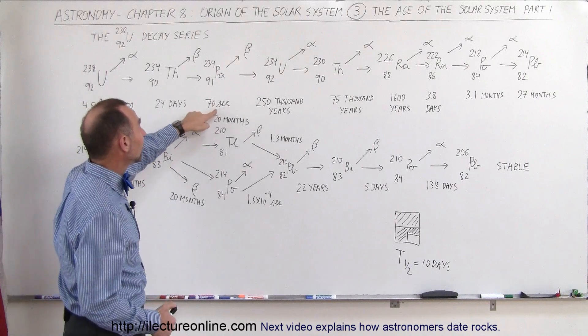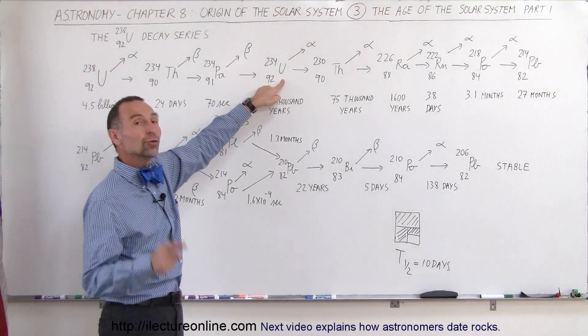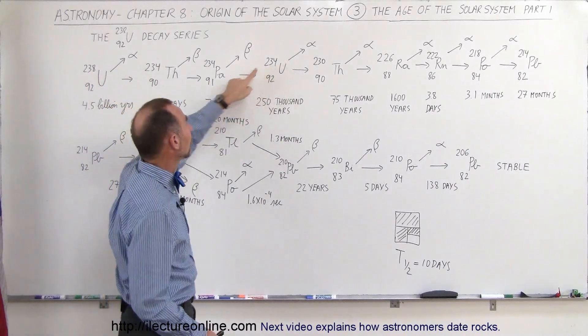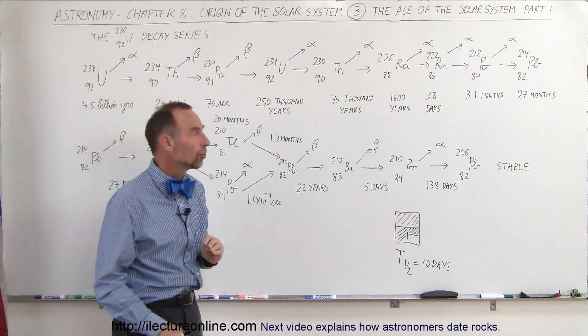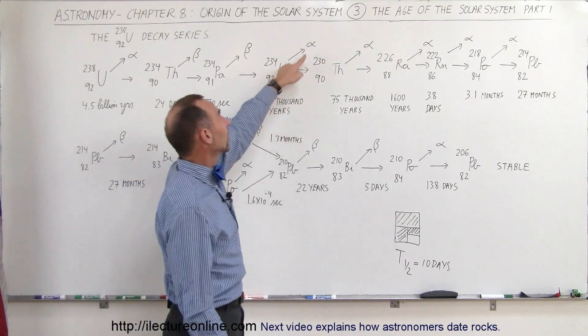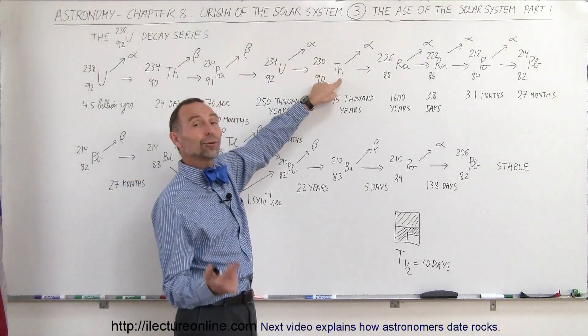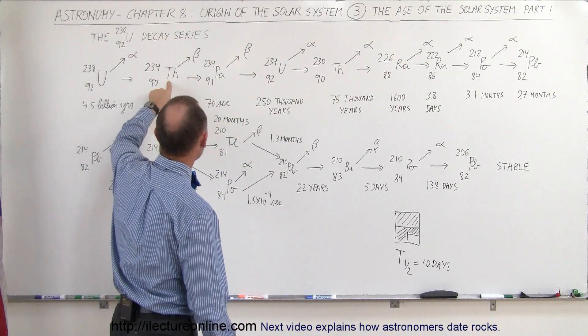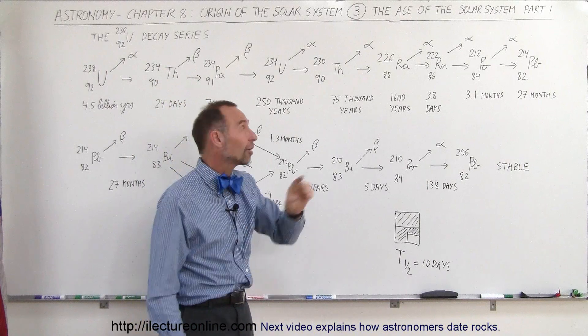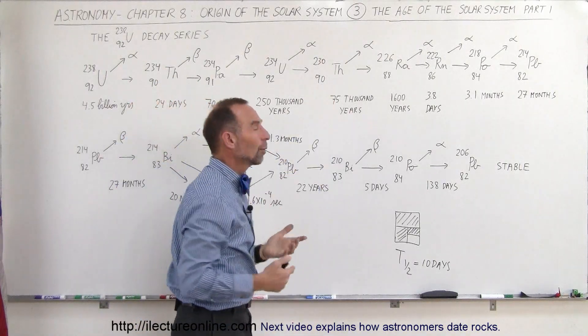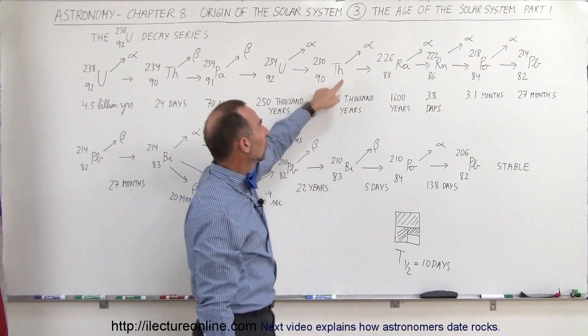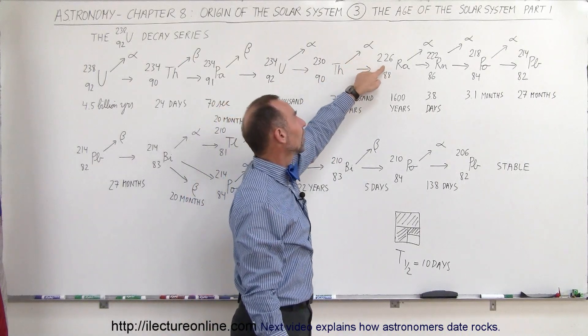Protactinium has a half-life of 70 seconds, it shoots out a beta particle and turns itself back into Uranium. Not the same Uranium we had over here, because this Uranium is Uranium-234, not 238, it has four less neutrons. But it is also radioactive, half-life is 250,000 years. It shoots out an alpha particle and turns itself back into Thorium, but not the same Thorium we had over here, because this is Thorium-230, not 234, it has four less neutrons, of course it has the same number of protons, which is what makes it Thorium. Then Thorium half-life is about 75,000 years, it shoots out an alpha particle and turns itself into Radium.